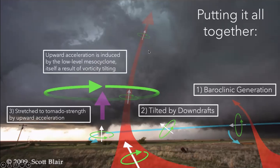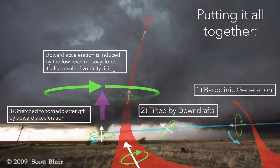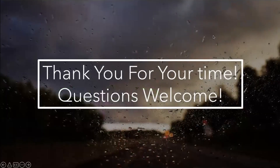That upward acceleration is itself induced by the low-level mesocyclone, which is a result of the tilting of environmental vorticity. This is really showing all three of the vorticity processes together — both vorticity generated by the storm and from its environment. Vorticity is a really powerful tool for talking about storm dynamics because pretty much every storm-scale process is associated with vorticity in some way. With that, I'm done with the regular presentation. Thank you again for inviting me — it was a lot of fun to put this together. I'm happy to take questions.